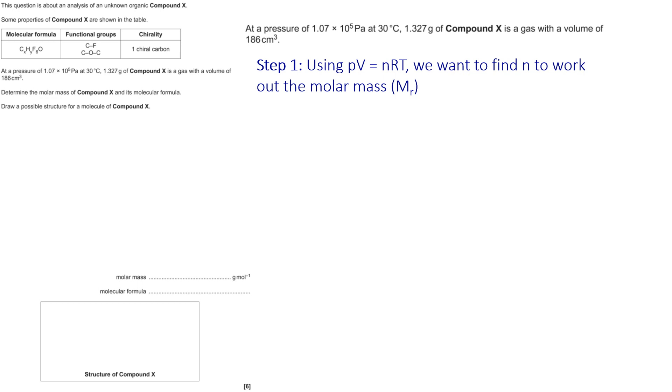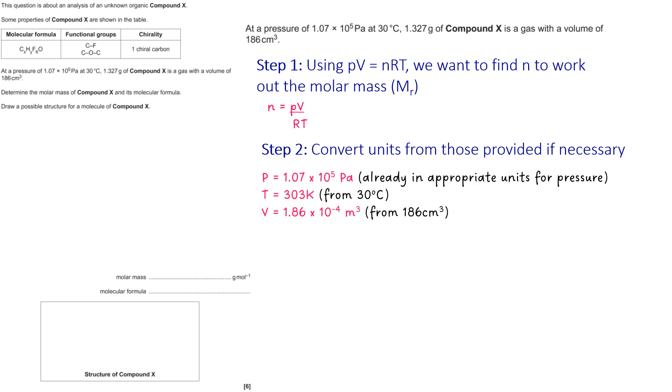To do this we want to find n in PV = nRT. So doing that rearrangement shows your first piece of thinking so you get credit for that. Now you need to convert any units from those provided if necessary, remembering pascals, Kelvin, and meters cubed. One of them was in the correct unit but two of them weren't, so I had to convert my temperature and my volume as well.